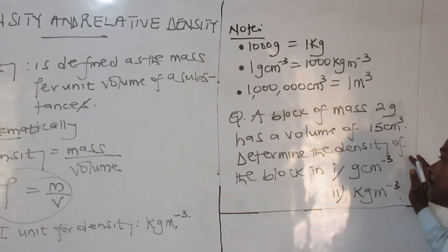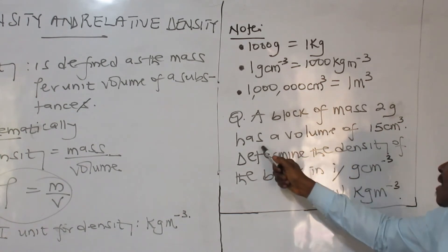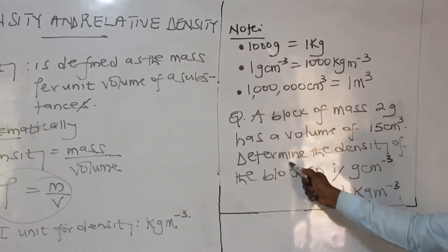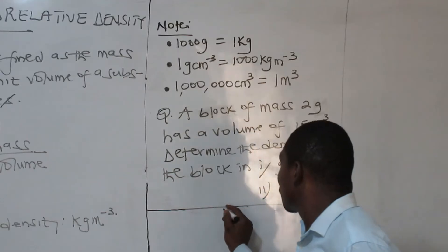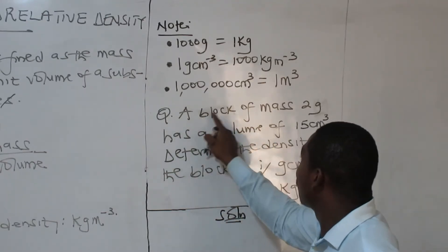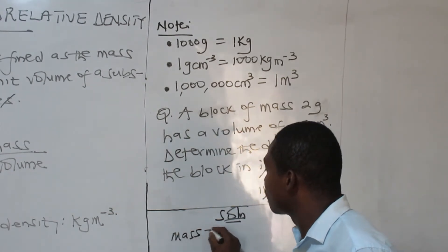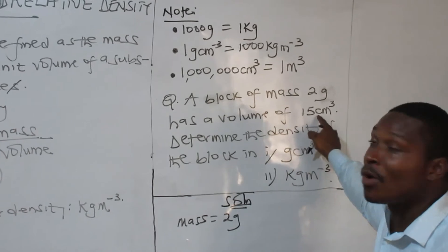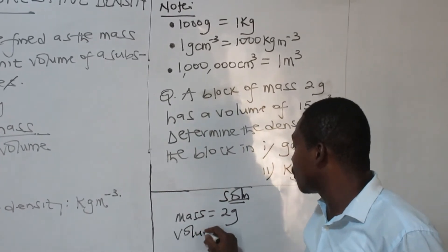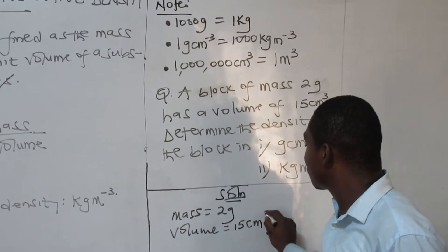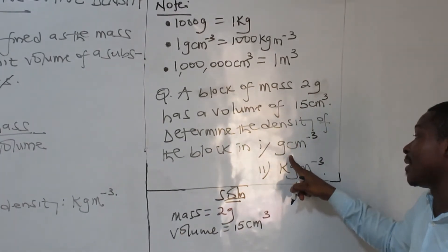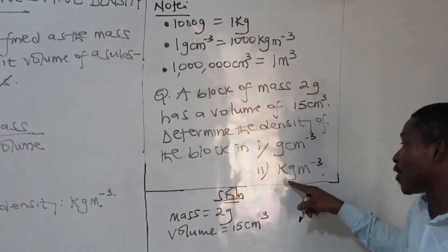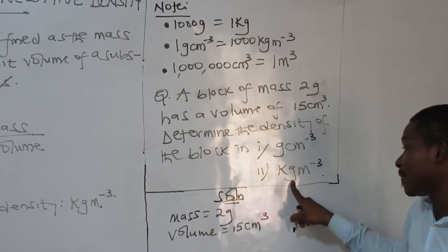Now let's look at this sample question. A block of mass two grams has a volume of 15 cm³. Determine the density of the block in gram per cm³, and also determine the same density in kilogram per cubic meter. That second form is the standard unit form.